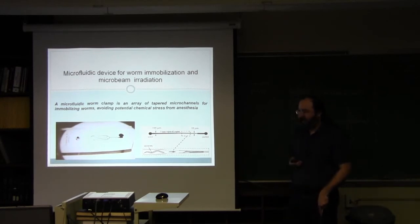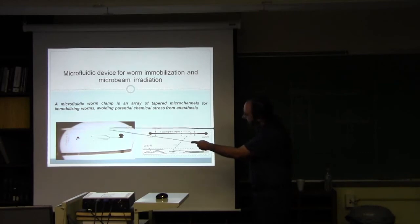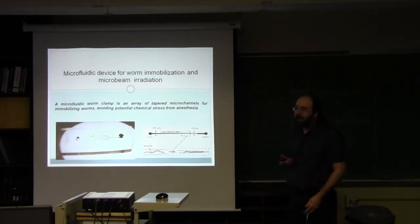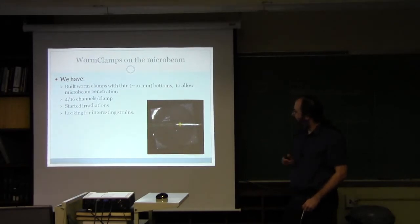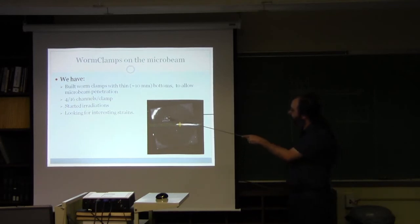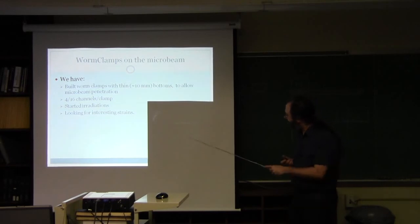These clamps were actually developed for doing imaging of worms. At high resolution, you don't want the worm to be moving. I showed yesterday at the tour one of these clamps that were made for us that have a very thin bottom so that we can actually get a microbeam in through to the channels and irradiate the worms. Here we have a picture of one of the worms in a clamp on the microbeam exit window. The four here means that this is channel four out of the four channels.